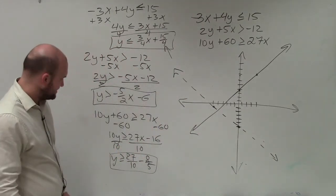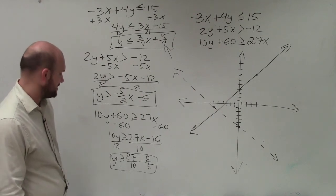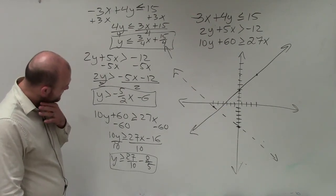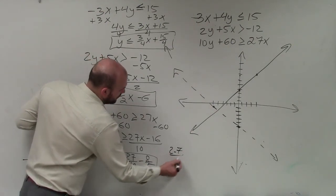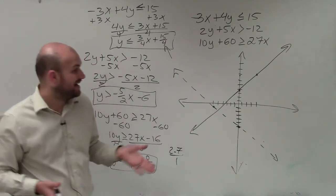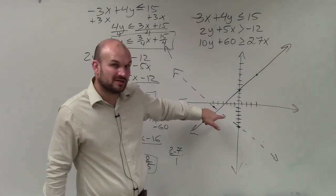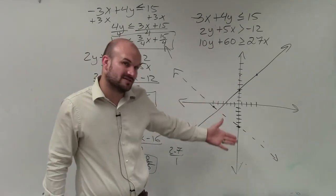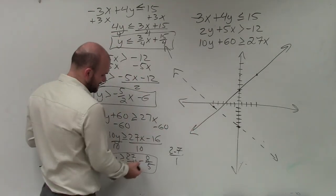All right. And the last one, which does not seem like fun at all, this one I have y is greater than or equal to 27 tenths x. Now, I can reduce that to 2.7 over 1. And for my case, I'm just, you know, we're not looking for exact, not like we're doing the objective functions. We're not looking for exact intersections. We're just looking at the idea of a graph.